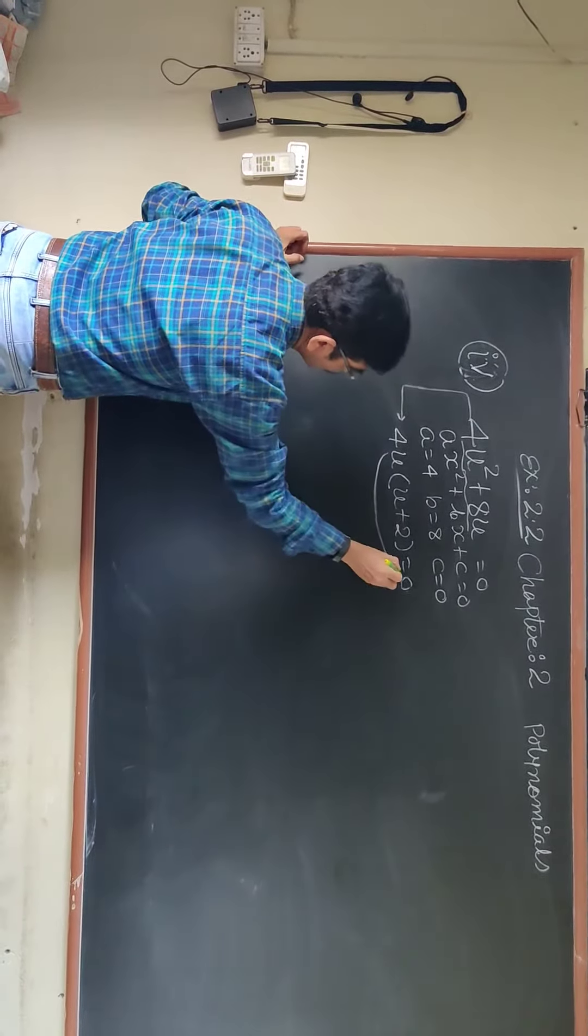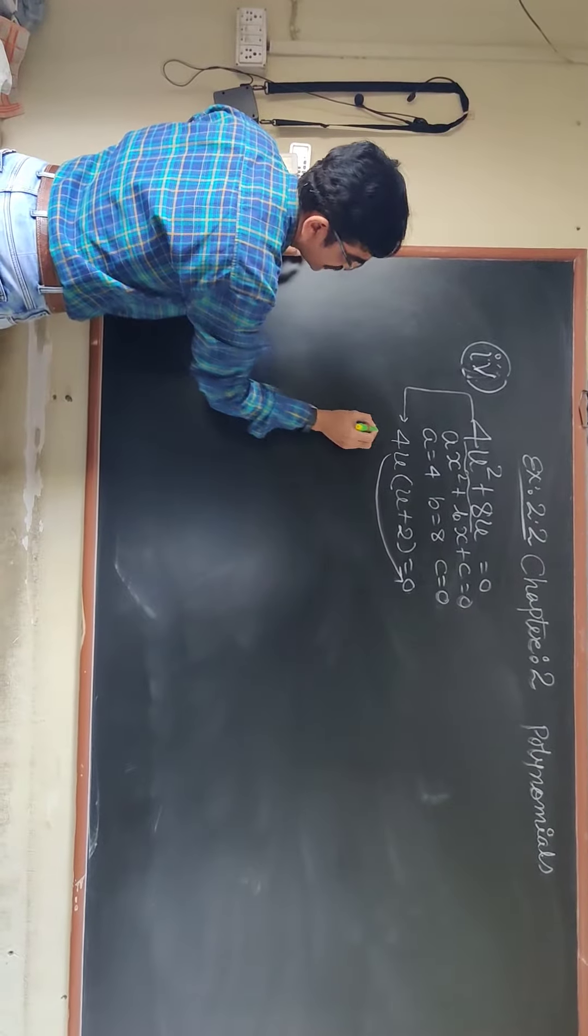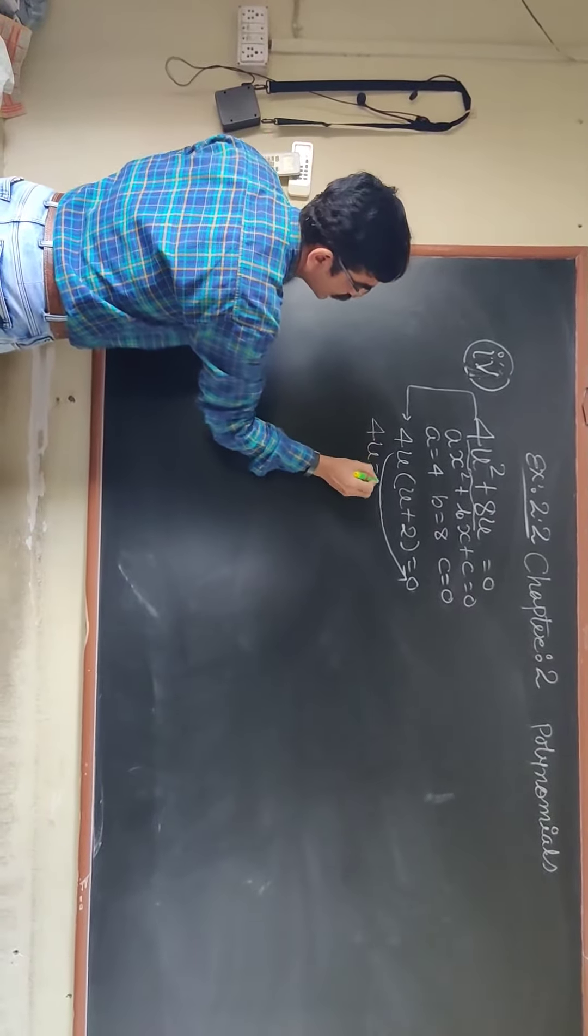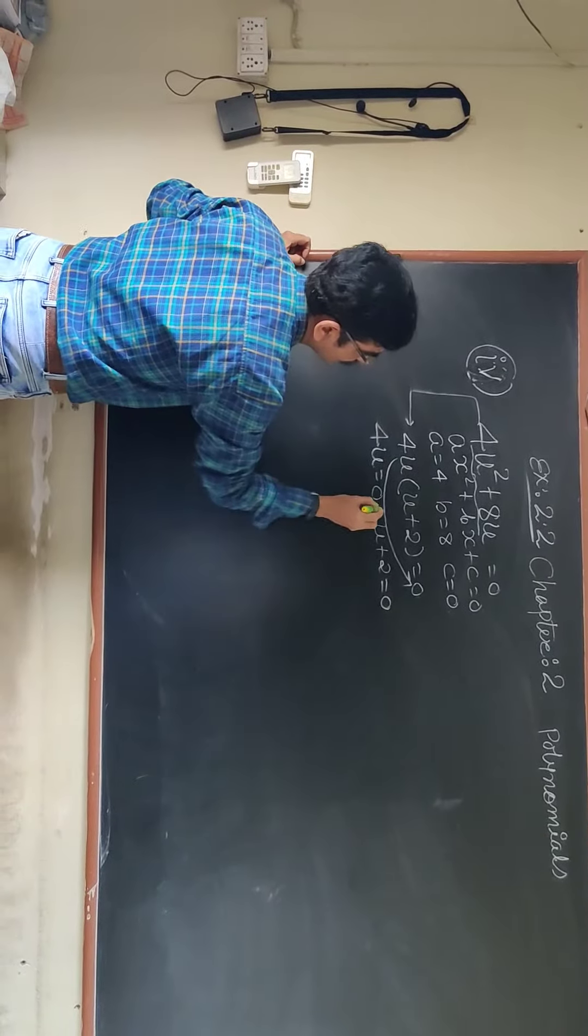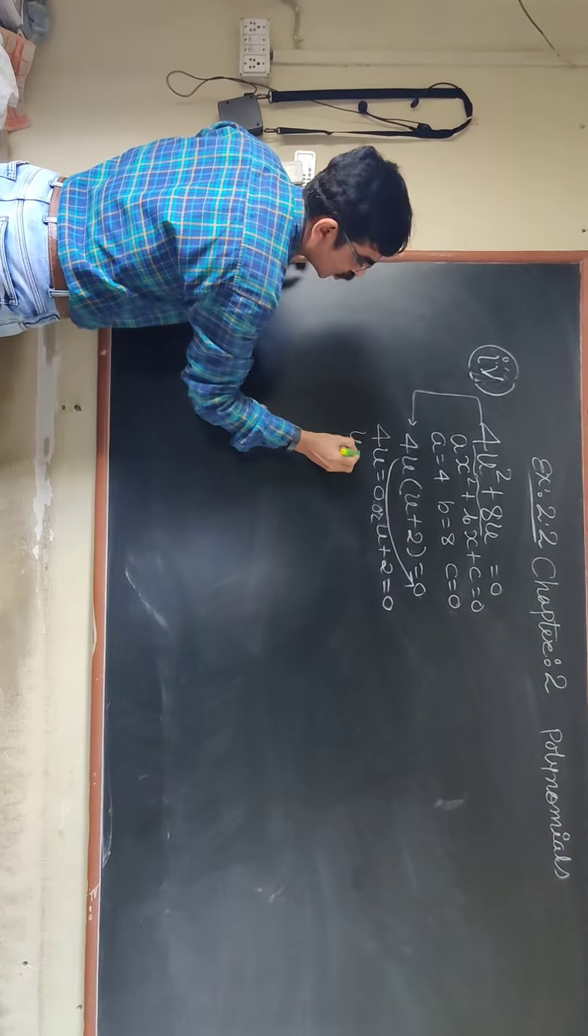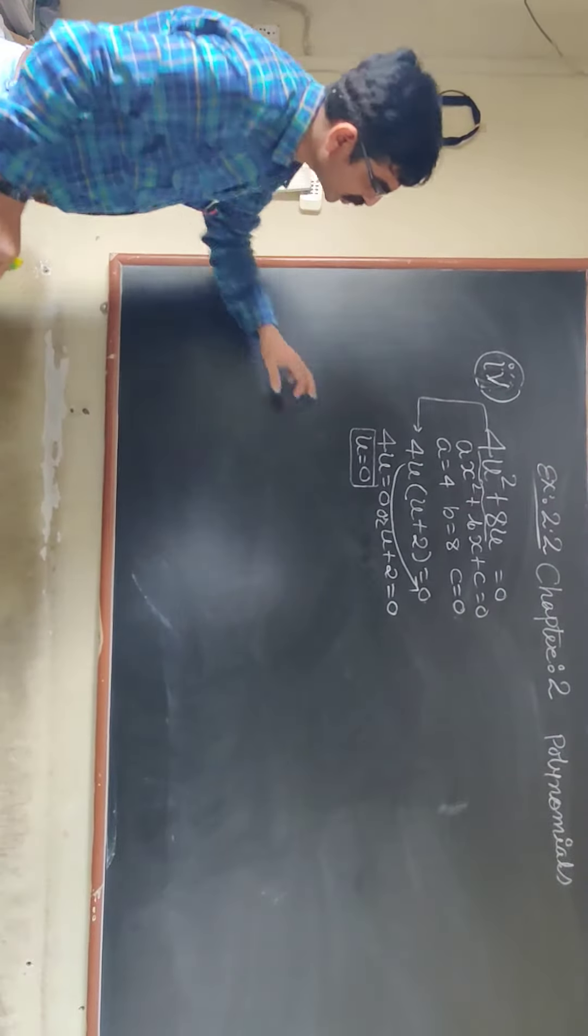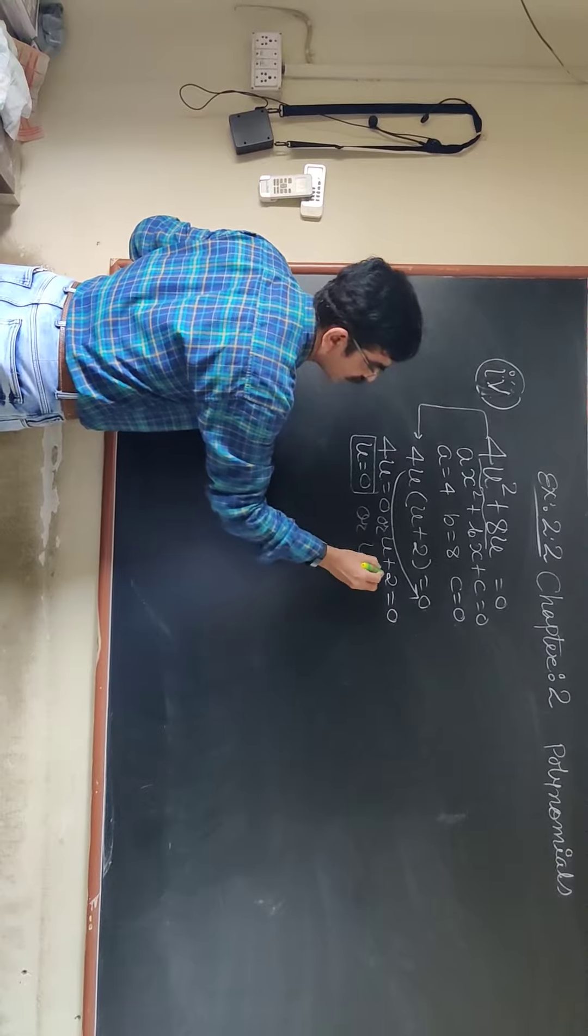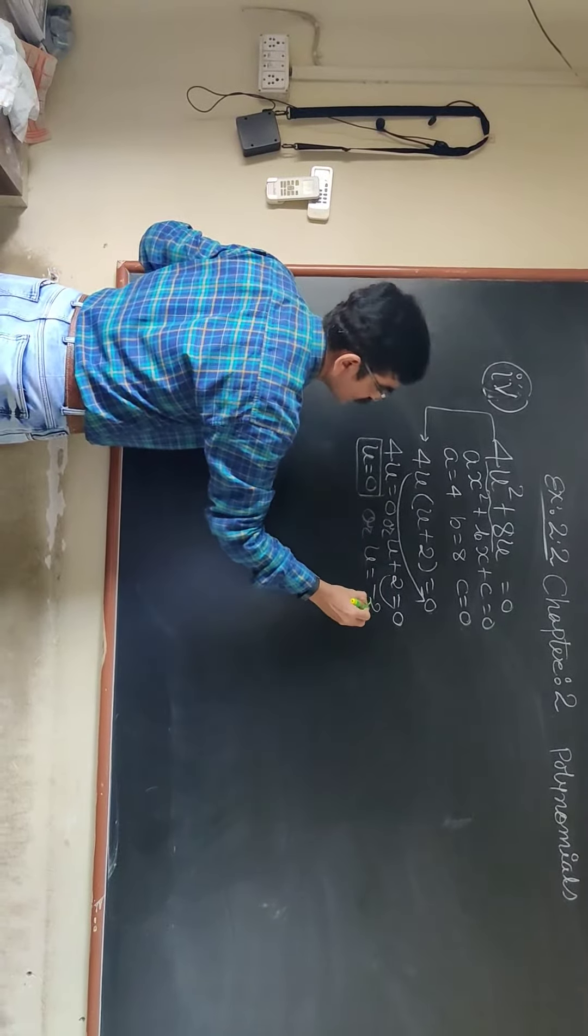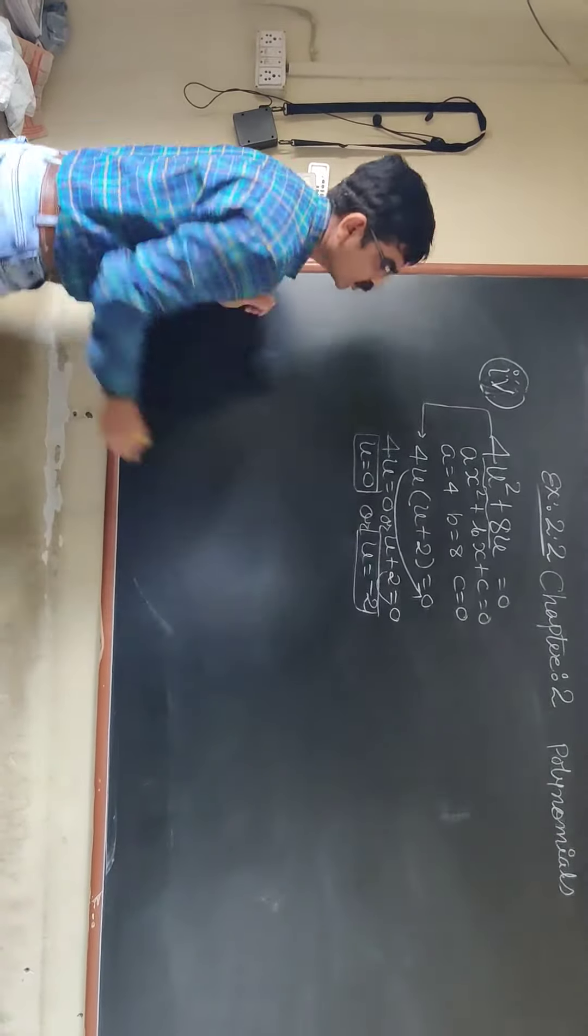Now we have to consider this. Don't neglect this. 4u equal to 0 and u plus 2 also equal to 0. That means one of the root is 0. And another root, u equal to plus 2 becomes minus 2, so minus 2. So there are two roots.